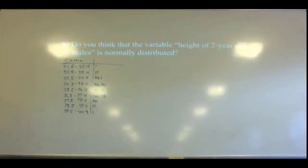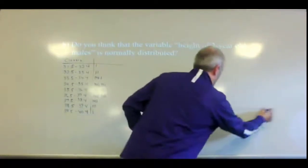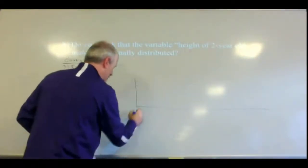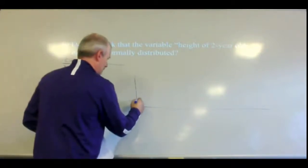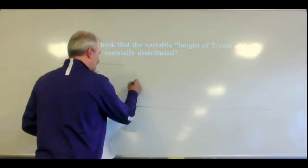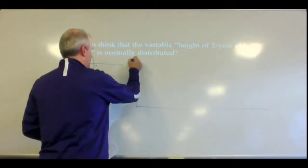If you look at the tally marks, you can see that it's bell-shaped, right? The most are in the middle and then it goes smaller and smaller as you go out. So draw a histogram. The biggest amount is 11, so we'll just go by 2: 2, 4, 6, 8, 10, and 12.